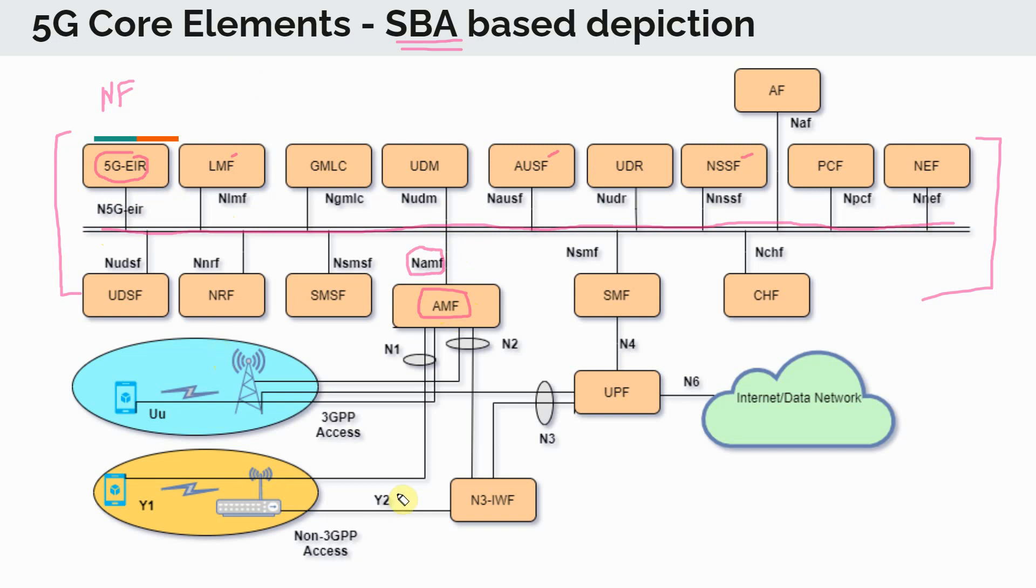Now, if we start on this picture from the bottom here, we have the radio access network. So we have the UE, we have the NGRAN or the new radio, NR radio. And this NR radio is connected to the AMF here. And we also have an interface from the UE all the way to the AMF.